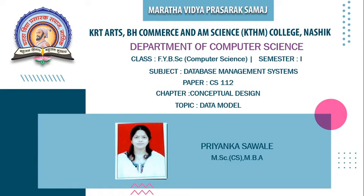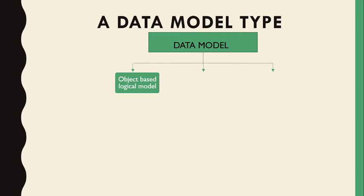Hello students, we continue with our second chapter on conceptual design. In a previous lecture, we discussed the overview of the database design process and the phases of development. Now in this lecture, we discuss data models. A data model is the abstraction process of hiding implementation details, showing only what is relevant to the particular user. It represents the logical structure of a database design. There are three types of data models.